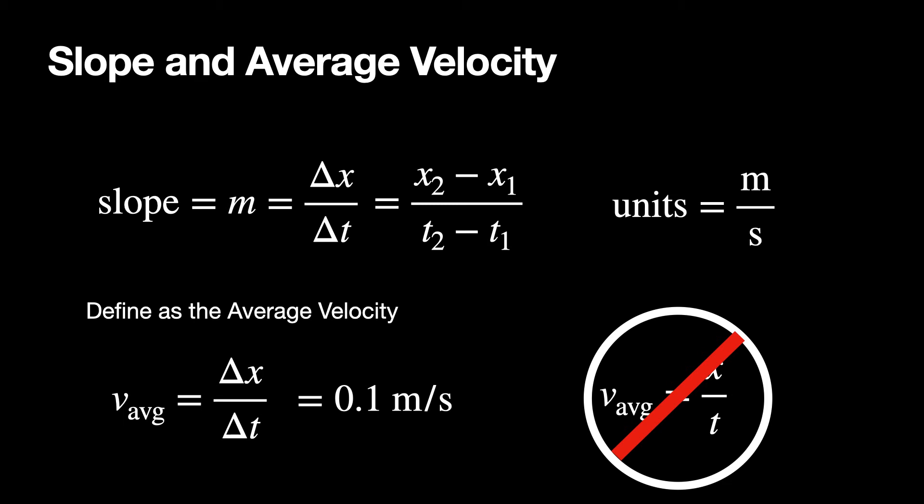So in the special case where you start at x equals 0 and t equals 0, then x over t gives you the right value, but it's still wrong. Velocity is the change in position over the change in time. It's not x over t. I don't care what your previous instructors told you. That's wrong. Are we cool now?